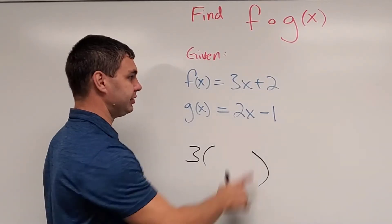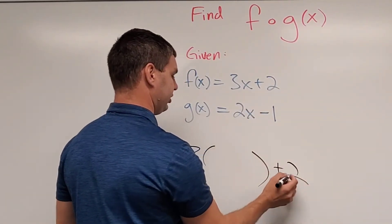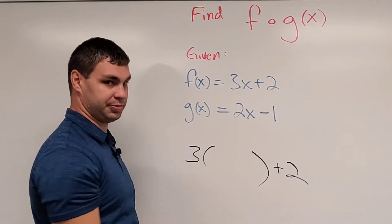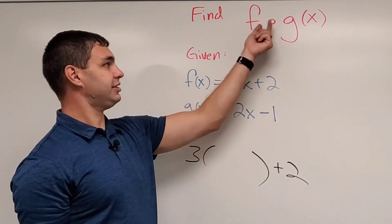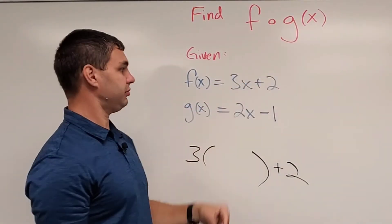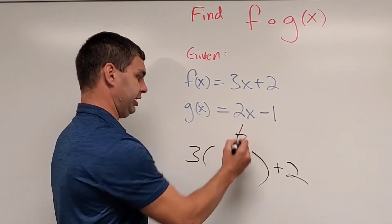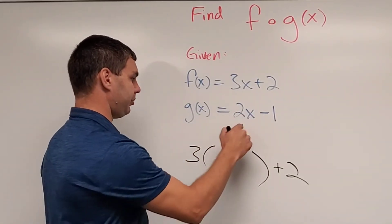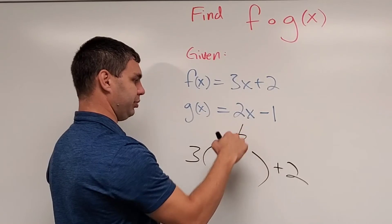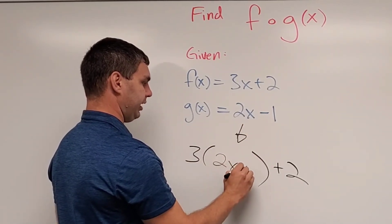Using open parentheses, I put plus two, so it looks exactly the same except instead of x I have an open spot. Since this is f of g, the g is going to go in that open spot. So I'm going to replace this open spot with 2x minus 1.